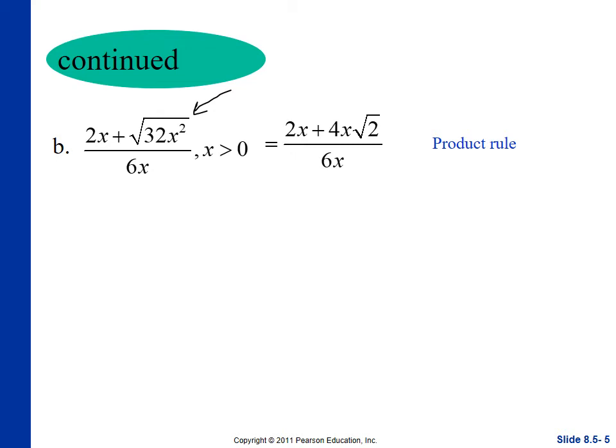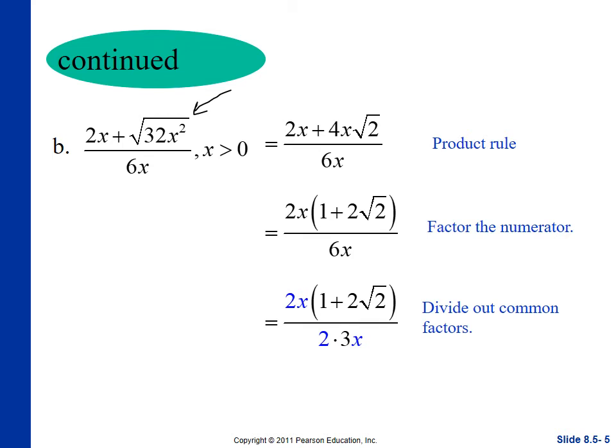Now, there's an x in each of these, so we can factor that out, 2x, and then we are going to cancel as much as possible. So, they've got 2 times 3x. I would have 2x times 3. I think that would make more sense. So, this becomes 1 plus 2 times the square root of 2 over 3.